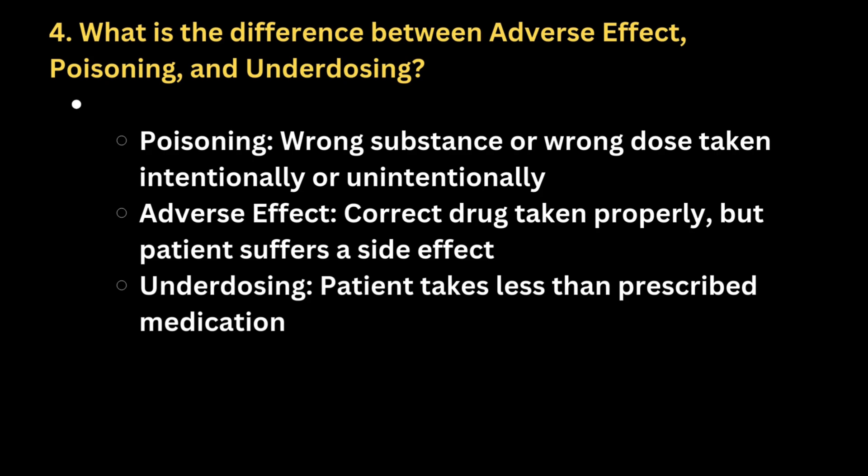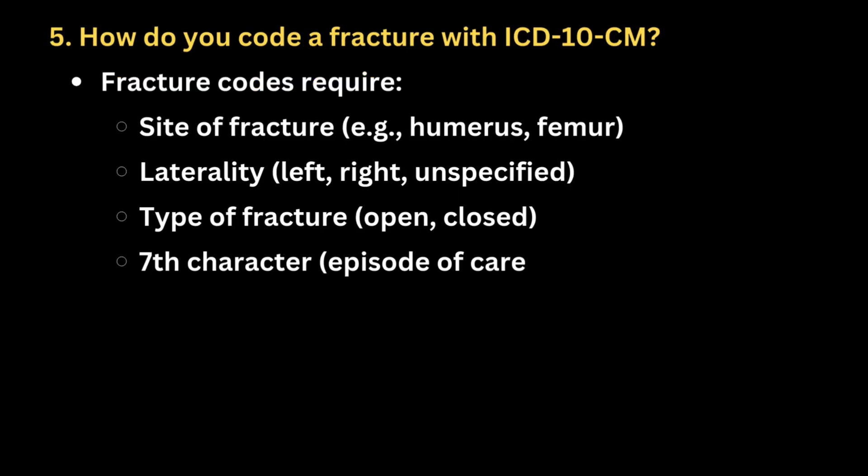The fourth question is: what is the difference between adverse effect, poisoning, and underdosage? Poisoning indicates a wrong substance or wrong dose taken intentionally or unintentionally. Adverse effect means the correct drug was taken properly but the patient suffers a side effect. Underdosage means the patient took less than the prescribed medication.